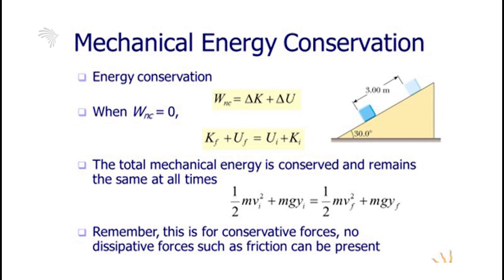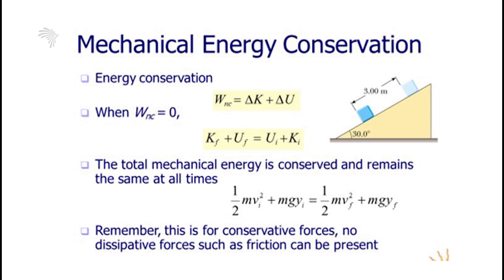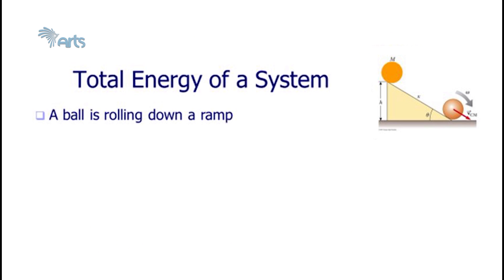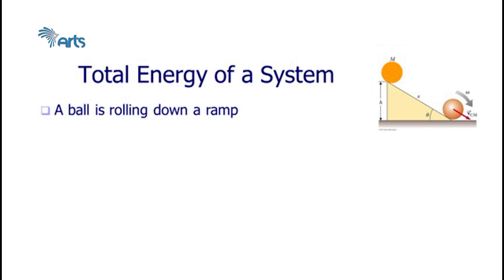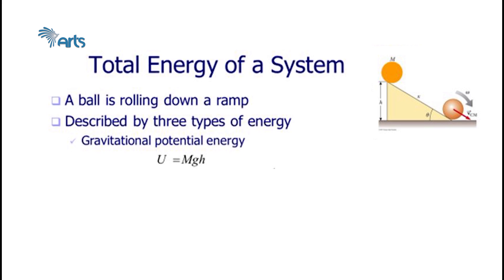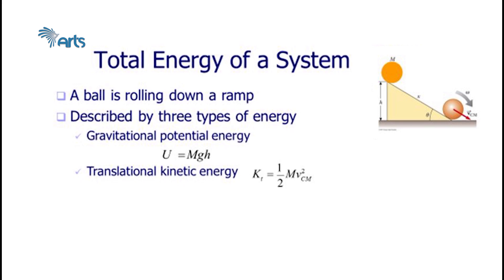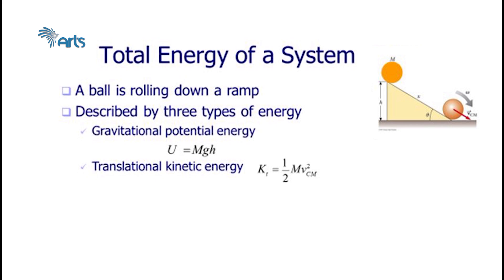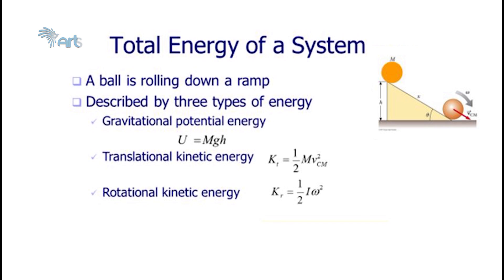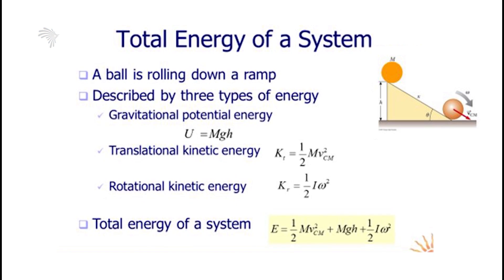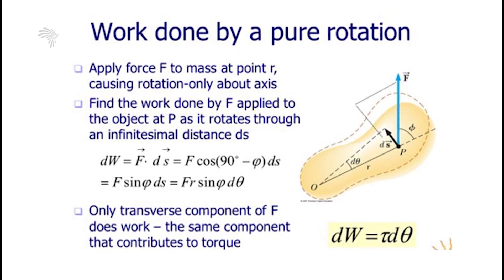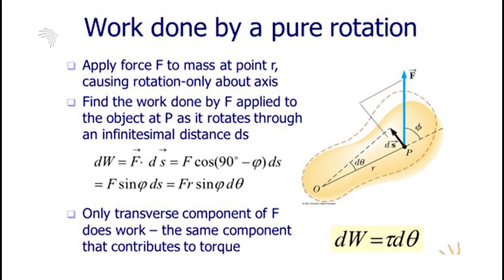For a sphere rolling down a ramp, in addition to translational kinetic energy, there is rotational kinetic energy. The sphere acquires three different energies: gravitational potential energy (mgh), translational kinetic energy (1/2·mv_cm²), and rotational kinetic energy (1/2·Iω²). Total energy is the sum: (1/2)mv² + mgh + (1/2)Iω². For work done by a pure rotation, it is calculated by torque times angular displacement theta.